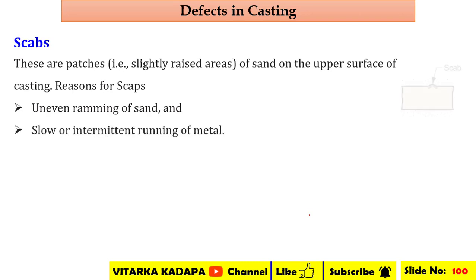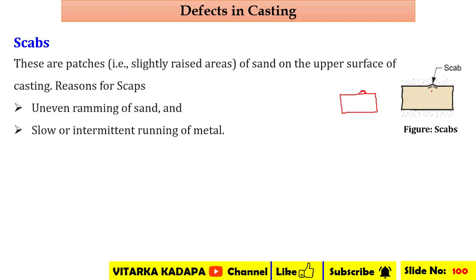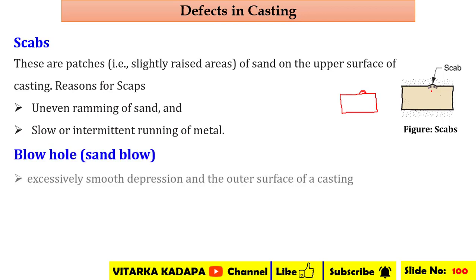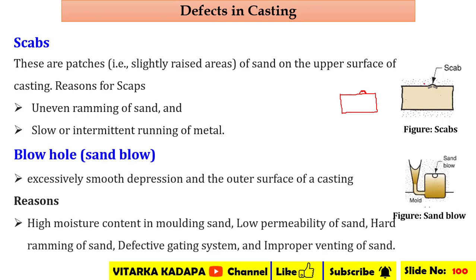Next are scabs — these are patches on the top surface of the casting. The mold is basically a rectangle shape, but some extension has occurred at the top surface; this is called a scab. The reasons for scab formation are uneven ramming of the sand, as well as slow and intermittent running of the molten metal through the cavity.